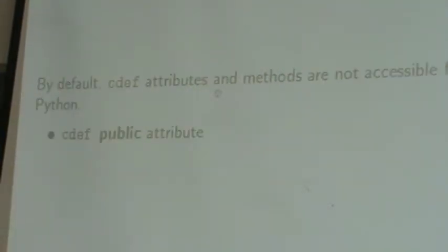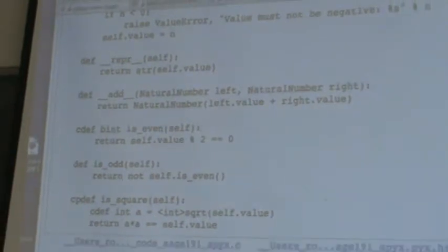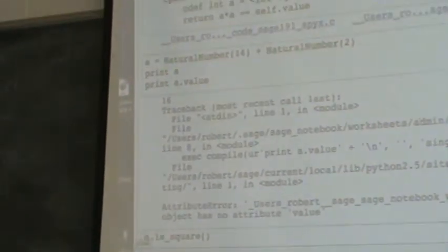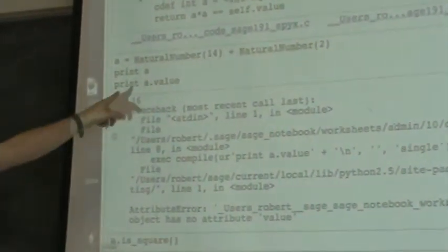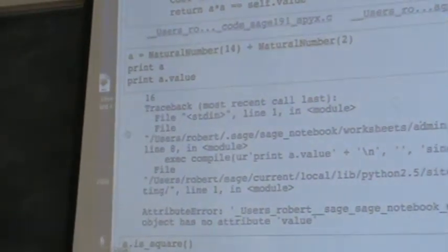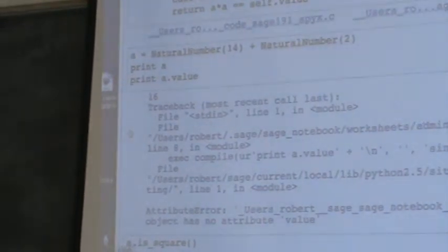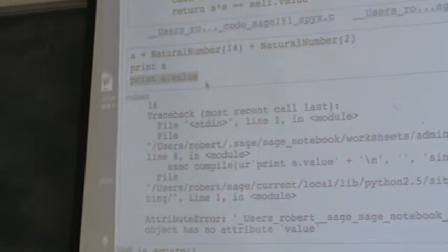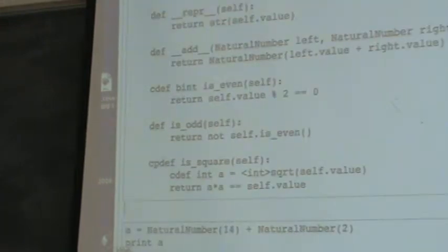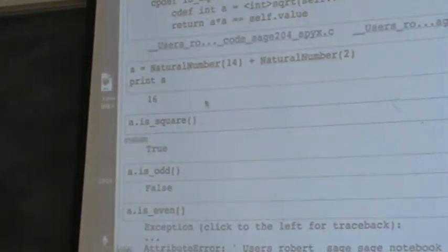So there are some disadvantages of CDEF attributes. For instance, even though value is an attribute of my natural number, I can't get at that from Python because it's a CDEF attribute. So what I can do is I can declare the attribute public. So now I can get that from Python. Now the disadvantage is that I could just reassign a number whose value is three, and that's obviously not a natural number. So I can declare things as read-only.